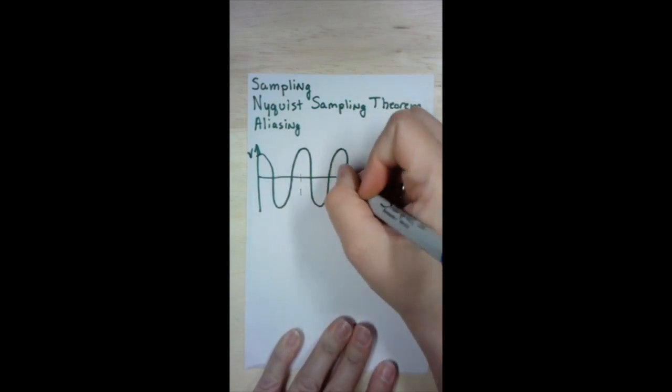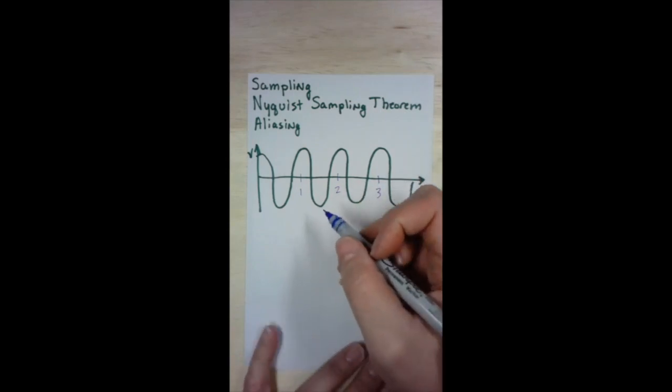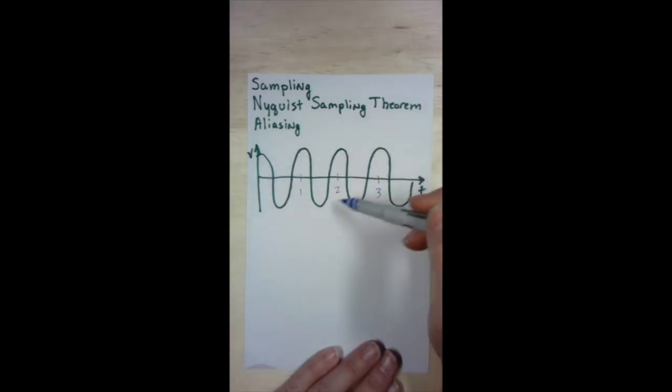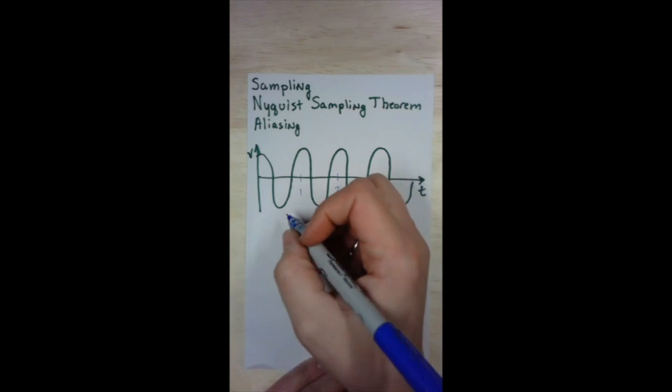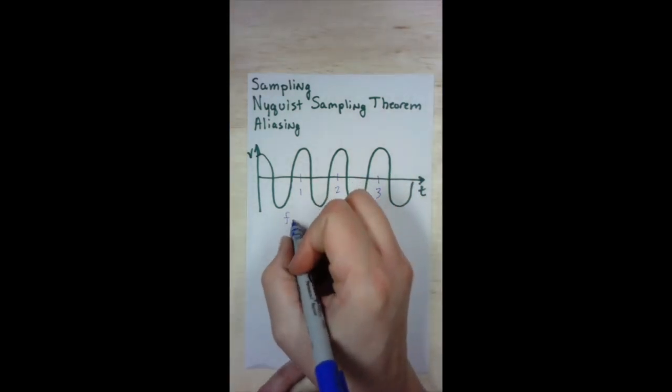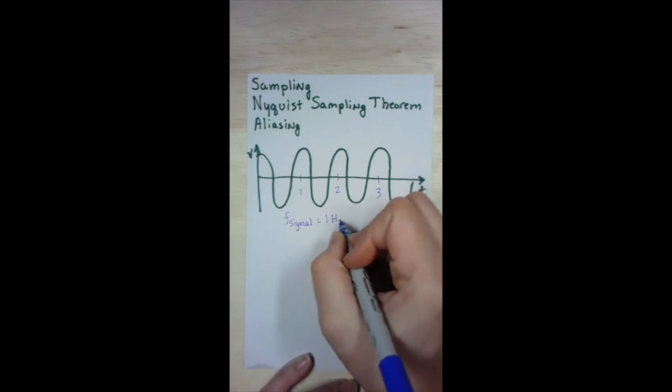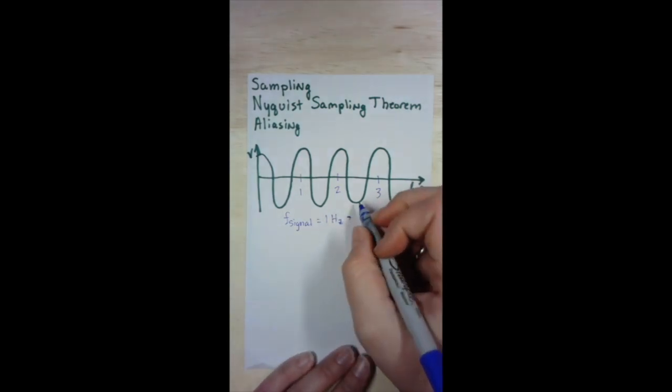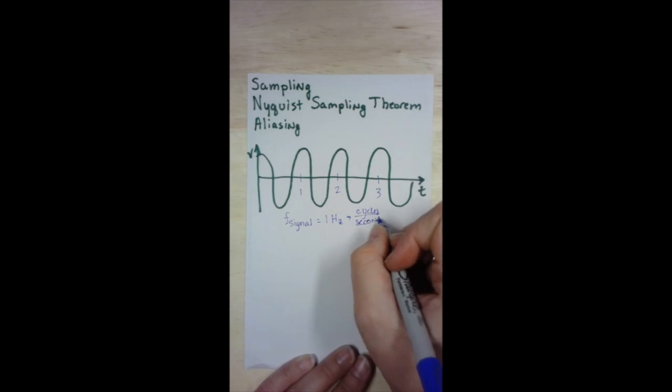So first of all, we have to look at the frequency of the signal. And we can see that the frequency of this signal is 1 hertz. We see the signal repeats every second. So the frequency of the signal equals 1 hertz, where hertz represents a rate of cycles per second.